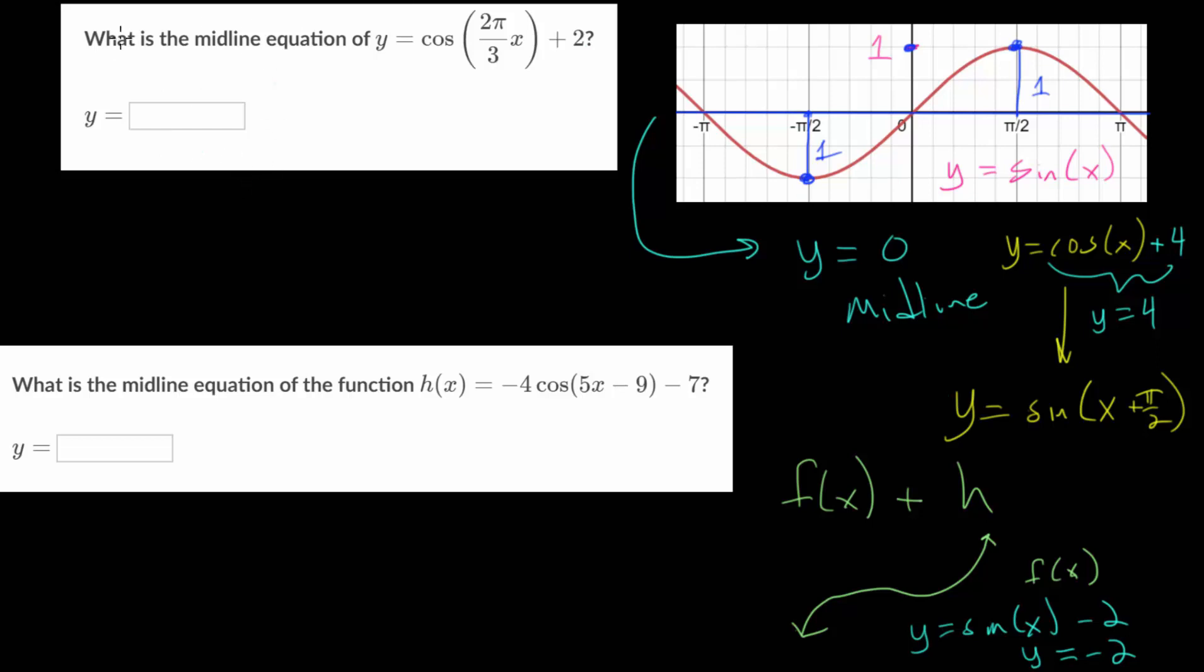Now with all this in mind, to figure out the midline of the sinusoidal equations, we basically are just looking at the outside. What are we adding or subtracting from our function? Since we know the parent function, whether it's sine or cosine, will have a midline value of 0,